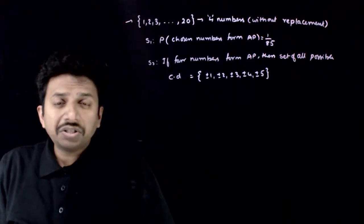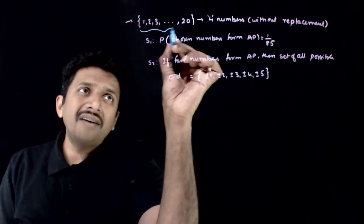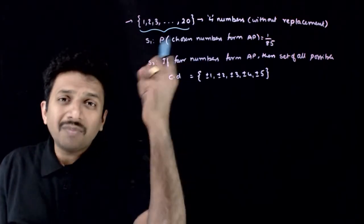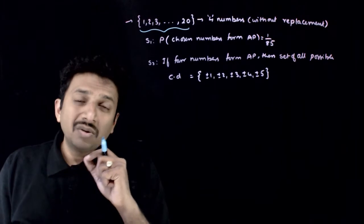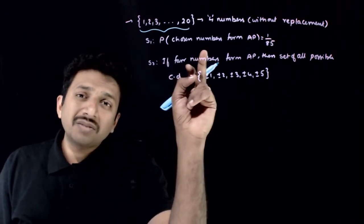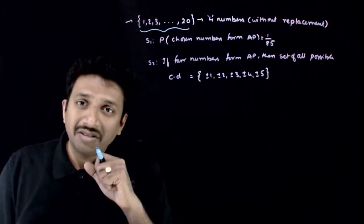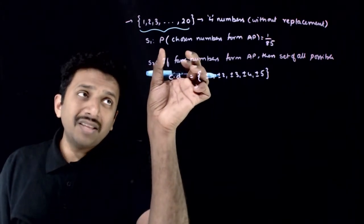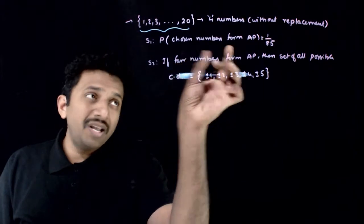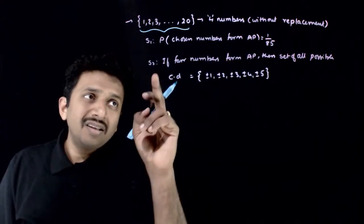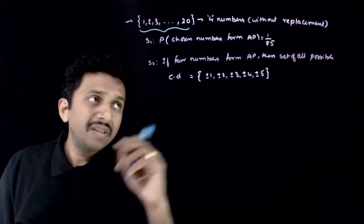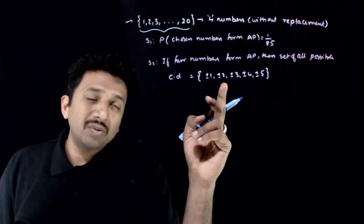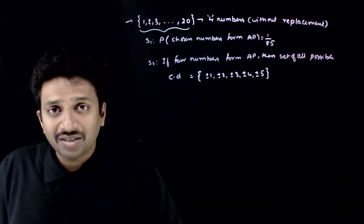Welcome students. In this question, you are given a set of natural numbers 1 to 20, and 4 numbers are chosen from the set without replacement. What is the probability that the chosen numbers form an AP if they are arranged in order? The first statement gives the probability that the 4 numbers form an AP as 1 by 85. The second statement says that if 4 numbers form an AP, the set of all possible common differences is equal to ±1, ±2, up to ±5.